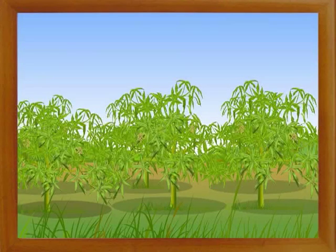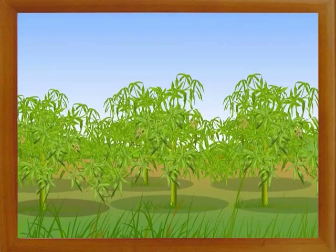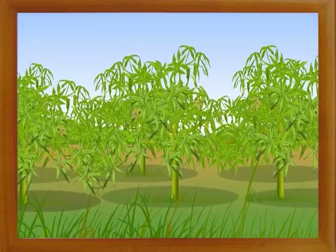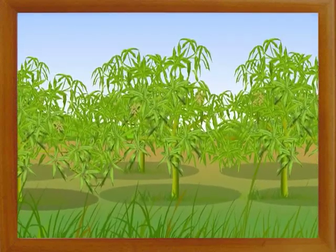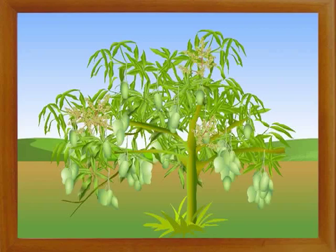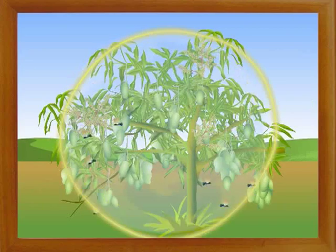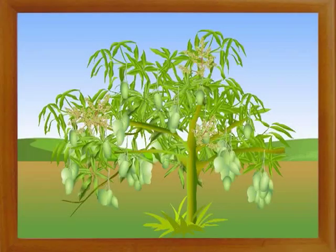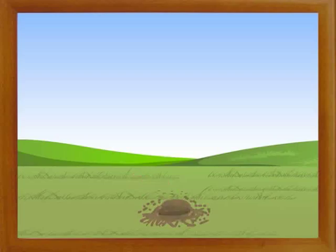In mass selection, a number of plants are selected to make a new variety. Seeds of plants which show favorable characters like better quality, disease resistance, higher yield, etc. are selected and sown in the next season.